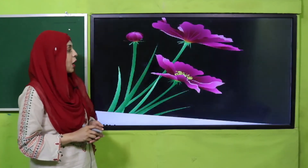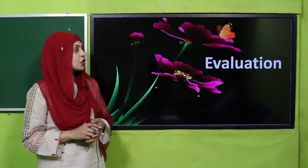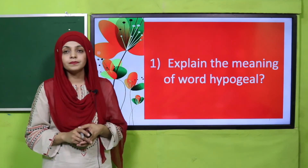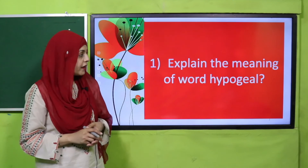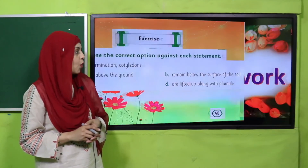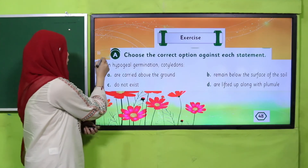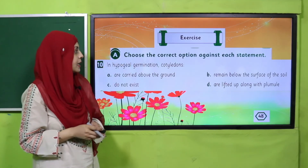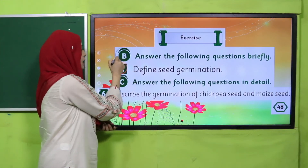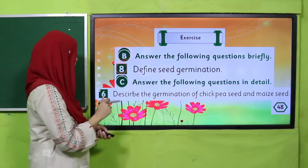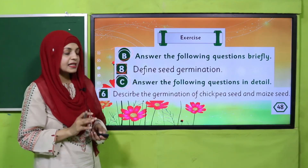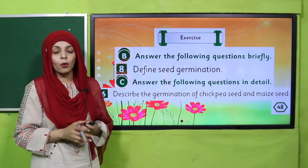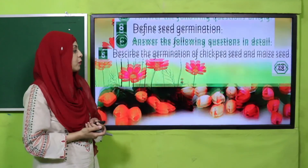I hope everybody has finished. We will now move forward towards evaluation — quickly answer: explain the meaning of the word hypogeal. For homework, you will do MCQ number 10 of Exercise A, question number 8 from Exercise B, and question number 6 from Exercise C, all given on page number 48 in your books. Complete both questions in your notebooks.